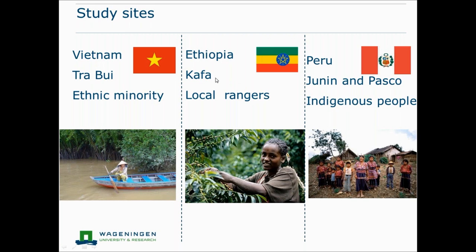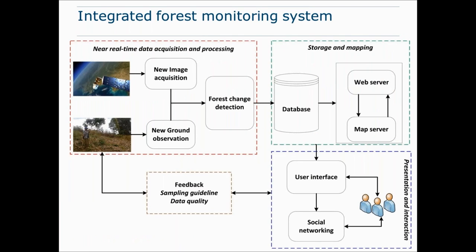I tried to answer these questions in three different parts of the world. In Vietnam, I worked with a small ethnic community in the Tra Bui commune. In Ethiopia, we worked in the UNESCO Biosphere Reserve called Kaffa — 800,000 hectares, the birthplace of coffee arabica — with local rangers as participants. In Peru, we worked in the Junin and Pasco provinces with three indigenous communities.